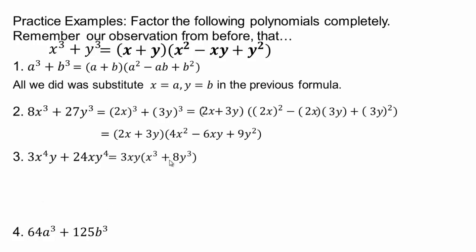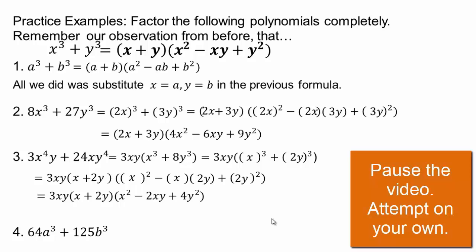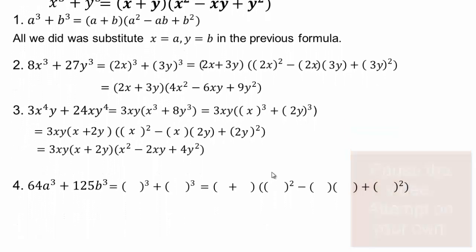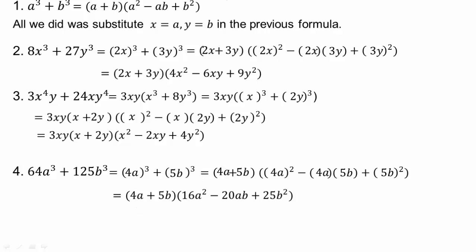Factor out the greatest common factor first, then apply the formula. If x goes there, it will go here, here, and here. What about here — 2y — so 2y goes here, here, and here. Then finish it off. Do the next one on your own — pause the video please. You have to be able to rewrite it in that form; then it's just a matter of applying the formula. Memorize the formula and try these problems.